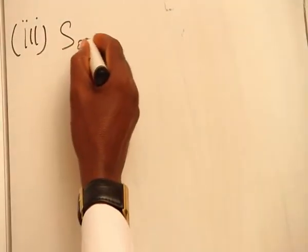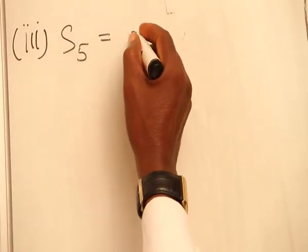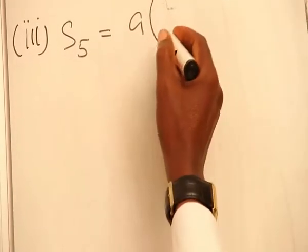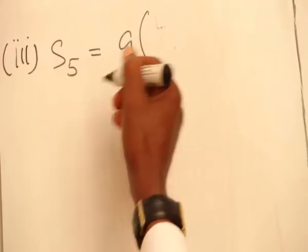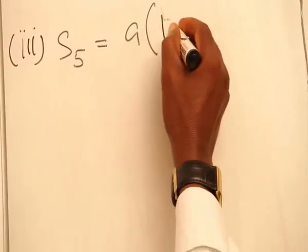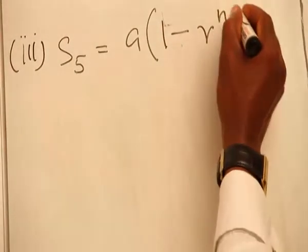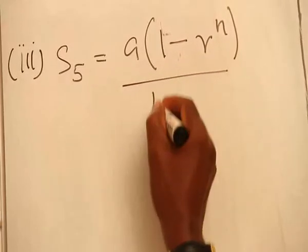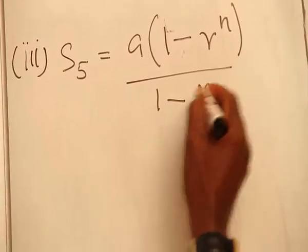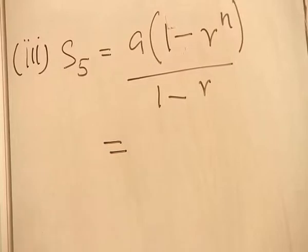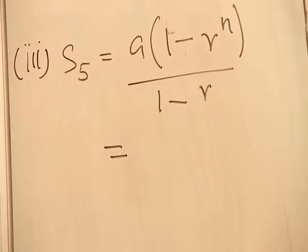Our S5 will be equal to A times 1 minus R raised to N, all over 1 minus R. That means our A, which is the first term,